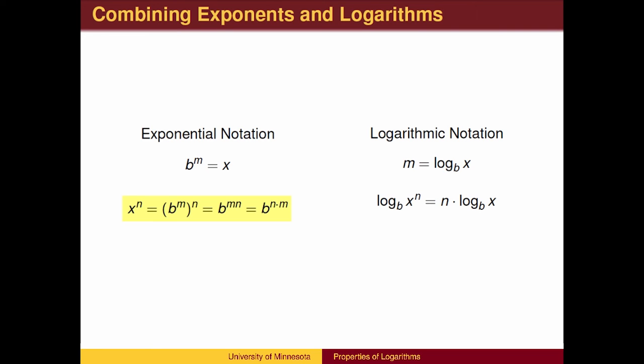We can also rewrite this as b to the power n times m. So n times m is the exponent we put on b to get x to the n.